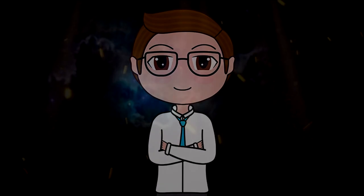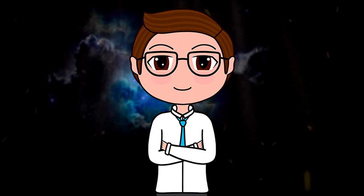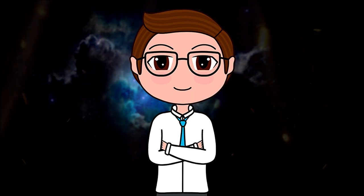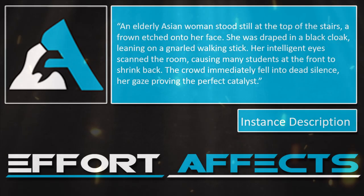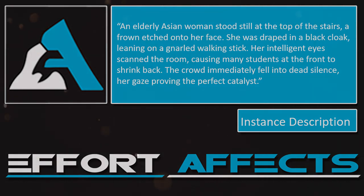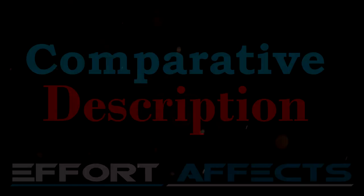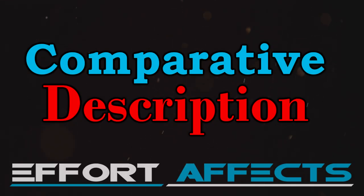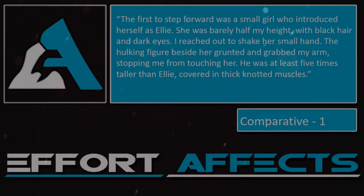The middle ground instance description can be a single descriptive instance applied towards a single character, all together and pretty much without breaks. Example: 'An elderly Asian woman stood at the top of the stairs, a frown etched onto her face. She was draped in a black cloak, leaning on a gnarled walking stick. Her intelligent eyes scanned the room causing many students at the front to shrink back. The crowd immediately fell into dead silence, her gaze proving the perfect catalyst.'